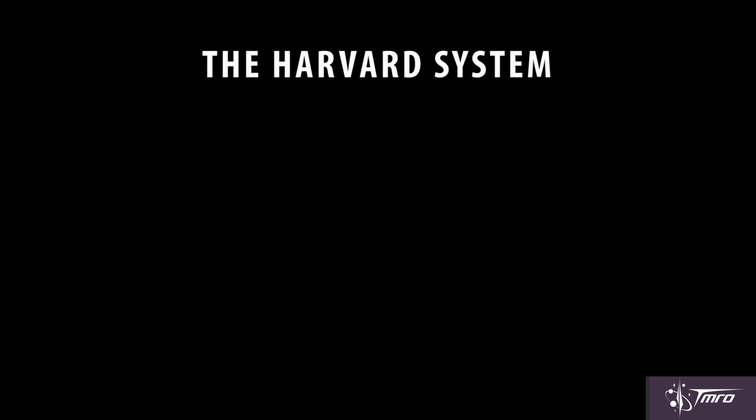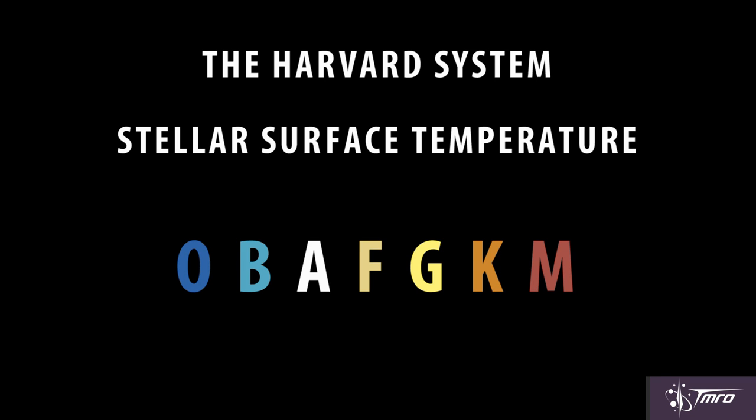The Harvard system is the one that most people are familiar with. It's a fairly simple system based on the surface temperatures of stars. There are seven classes that a star can be a part of, and they use letters as their designators: O, B, A, F, G, K, and M. There have been a few letters added since for special objects, but we'll be saving that for a later SpacePod. O stars have the hottest surface temperatures, and M stars have the lowest surface temperatures.